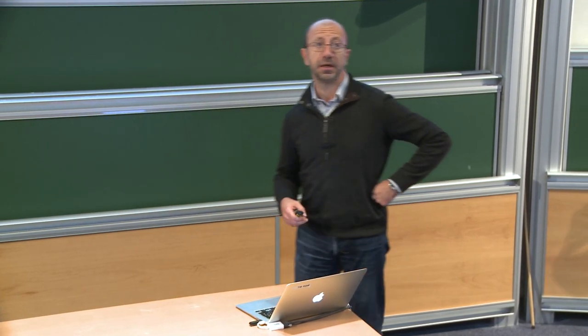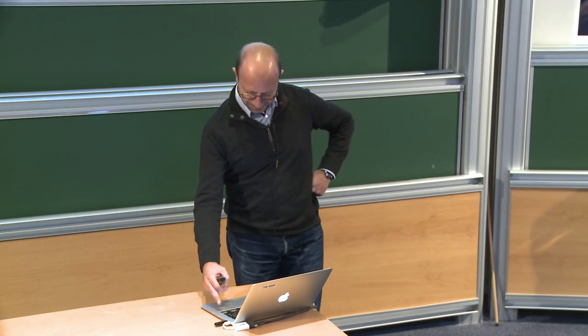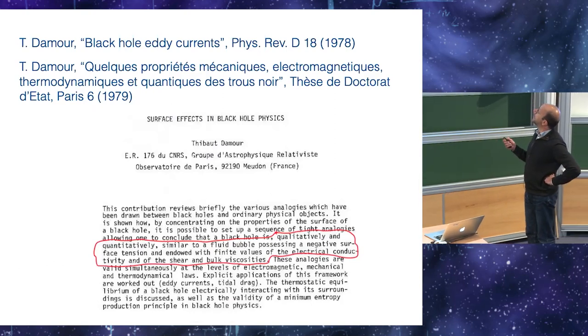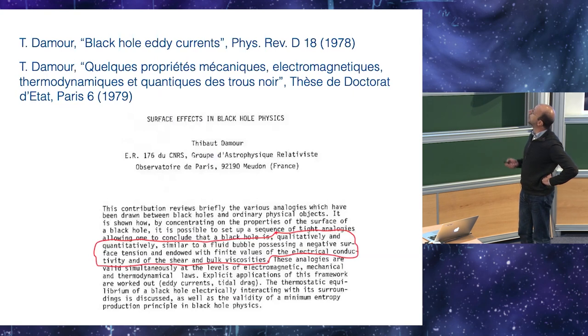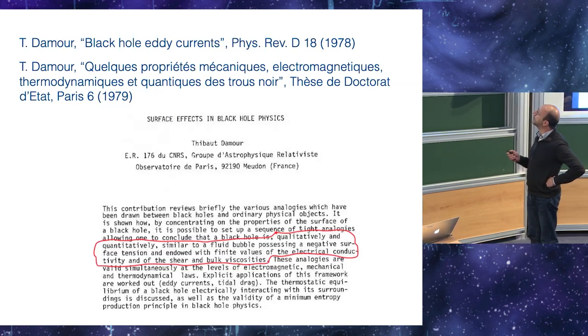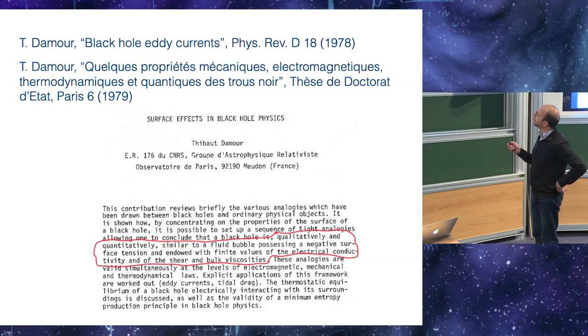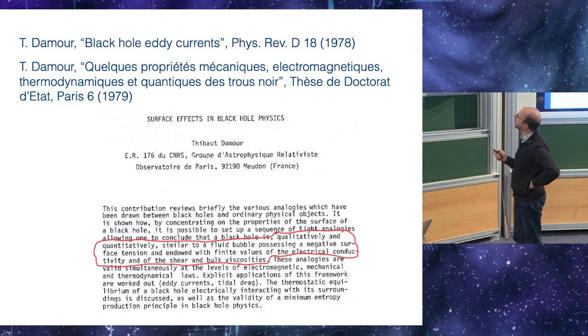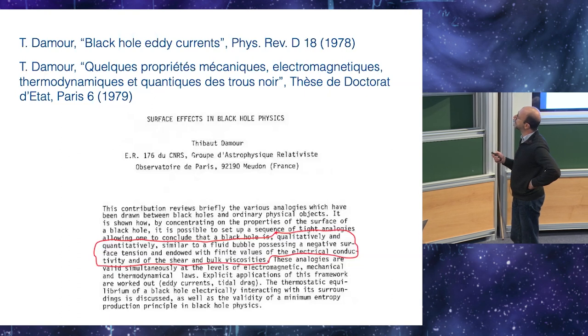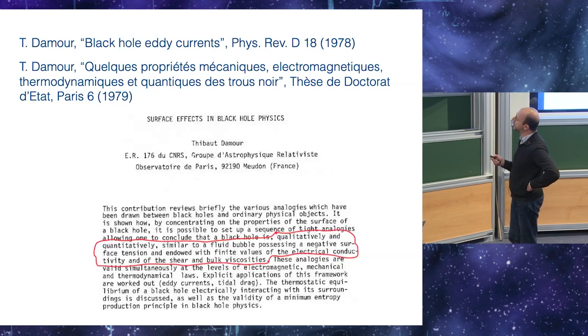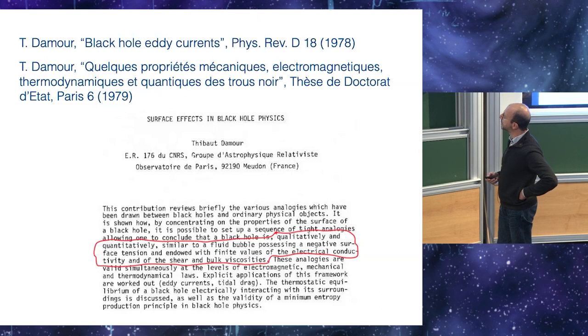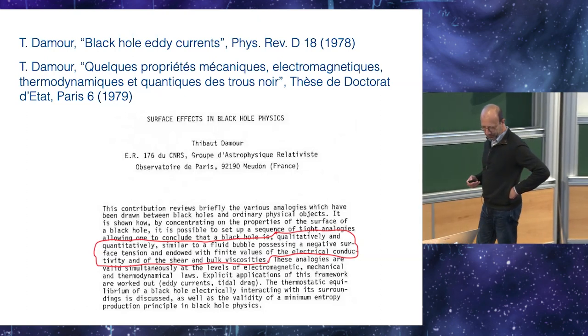And then the later related developments that have come from a different direction, as I will explain. So these two papers mainly, maybe there are some other few, but it's mostly his PhD thesis, in which, as we see from this abstract from a review paper of some years later, it is said that a black hole is qualitatively and quantitatively similar to a fluid bubble, possessing a negative surface tension and endowed with finite values of the electrical conductivity and of the shear and bulk viscosities. So this is the late 70s.